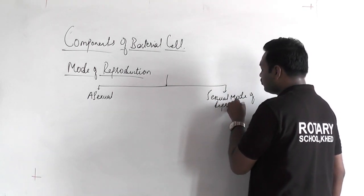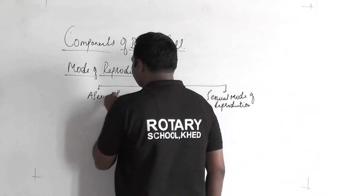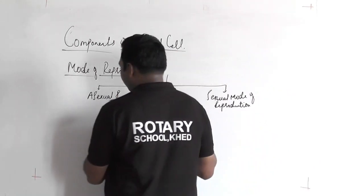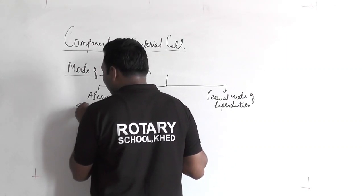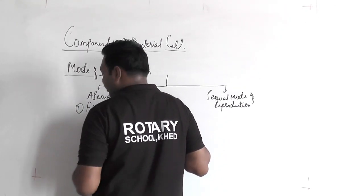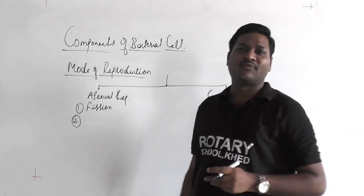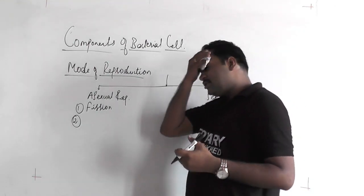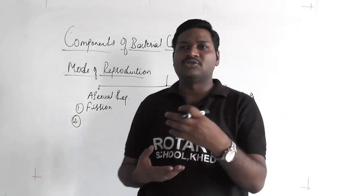Asexual reproduction in bacteria can take place by means of budding, fission, spore formation, or endospore formation. Endospore is highly resistant to heat. For example, when we take milk and pasteurize it — meaning we boil it — it is to prevent the growth of harmful bacteria. What happens is: after killing the bacteria, they get converted into endospores.